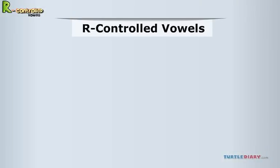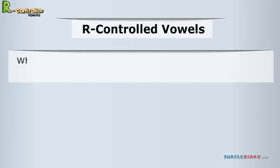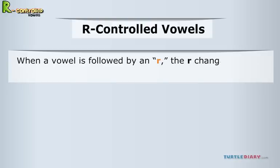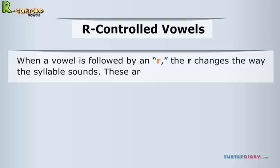R-Controlled Vowels. When a vowel is followed by an R, the R changes the way the syllable sounds. These are called R-controlled vowels. It's kind of like the R is extra bossy and is forcing the vowel to change what it's doing. It's controlling the vowel.